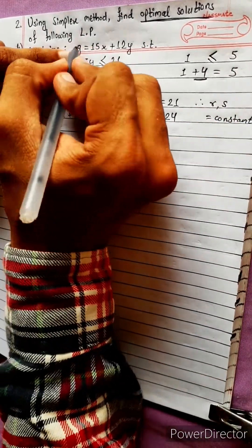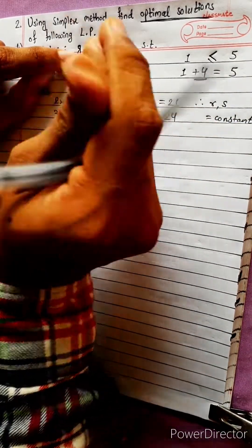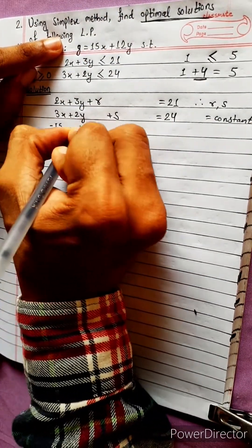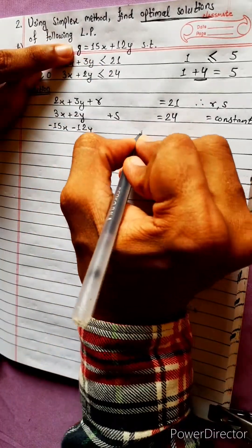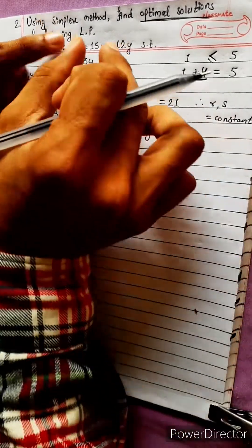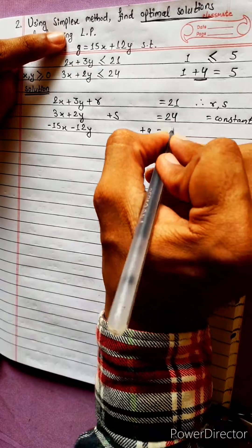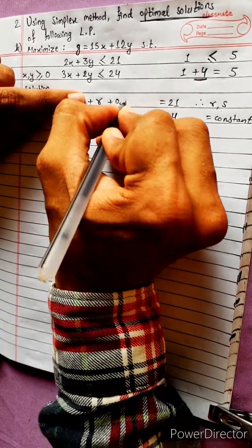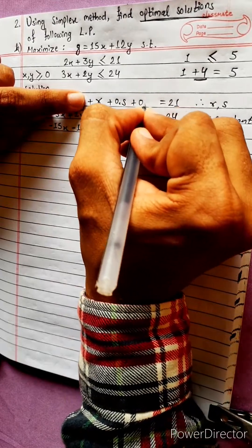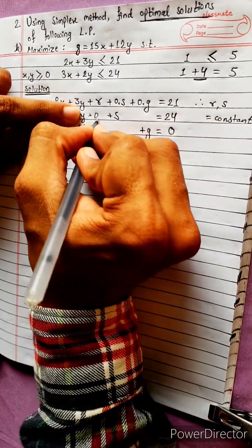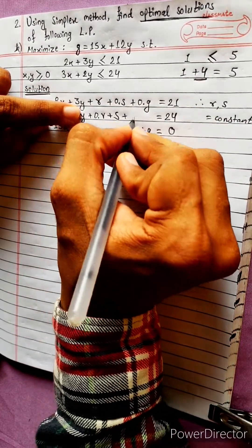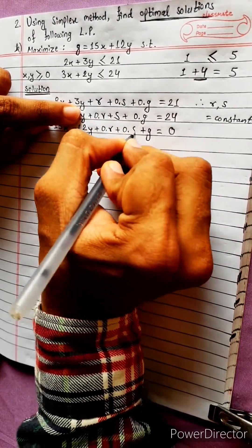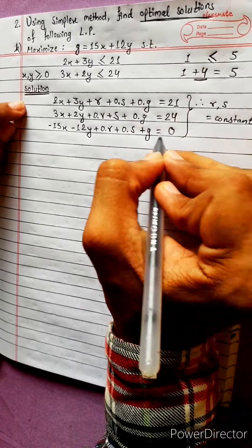This is minus 2, a positive change. We add minus 15x minus 12y, which equals 0. Now we have to add 0s: 0g, plus 0r, plus 0s, plus j. This is the standard form.